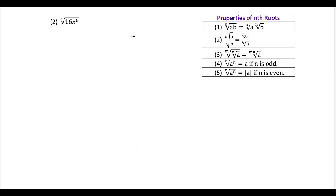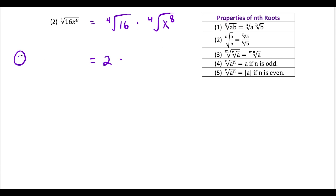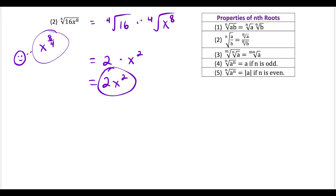For the second question we can use the first property and split this up as the fourth root of 16 times the fourth root of x to the eighth power. The fourth root of 16 is just equal to 2. For the second piece, using the power-over-root idea, this is x to the 8 over 4, which simplifies to x to the second power. You might ask why we don't have absolute value involved this time.